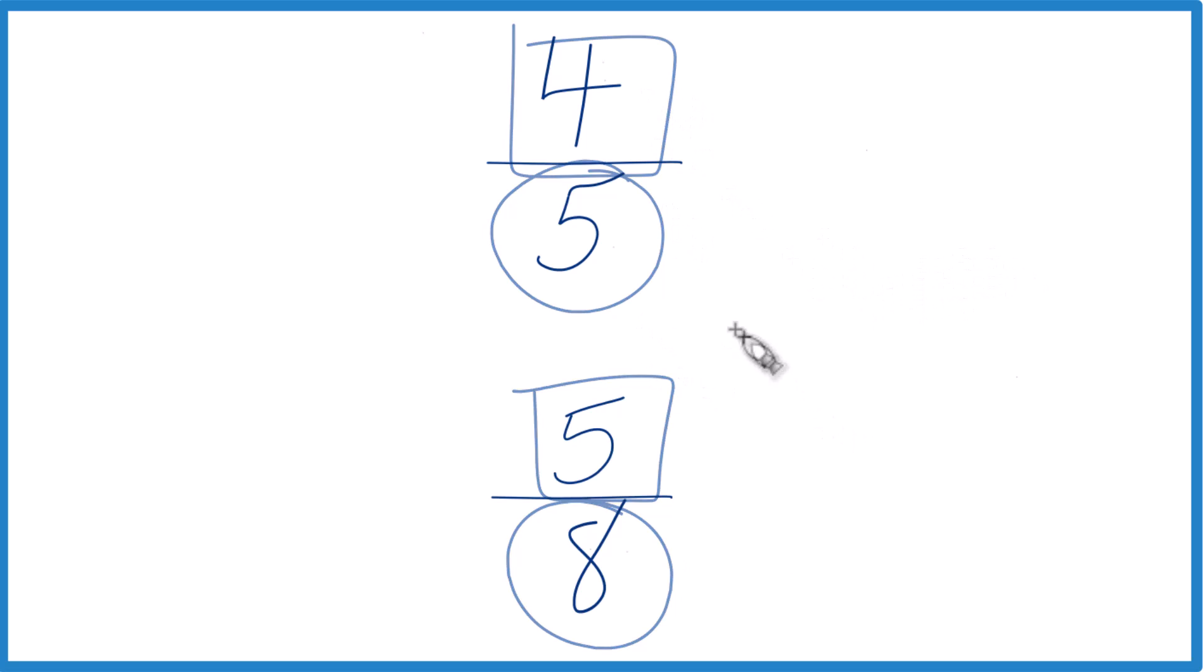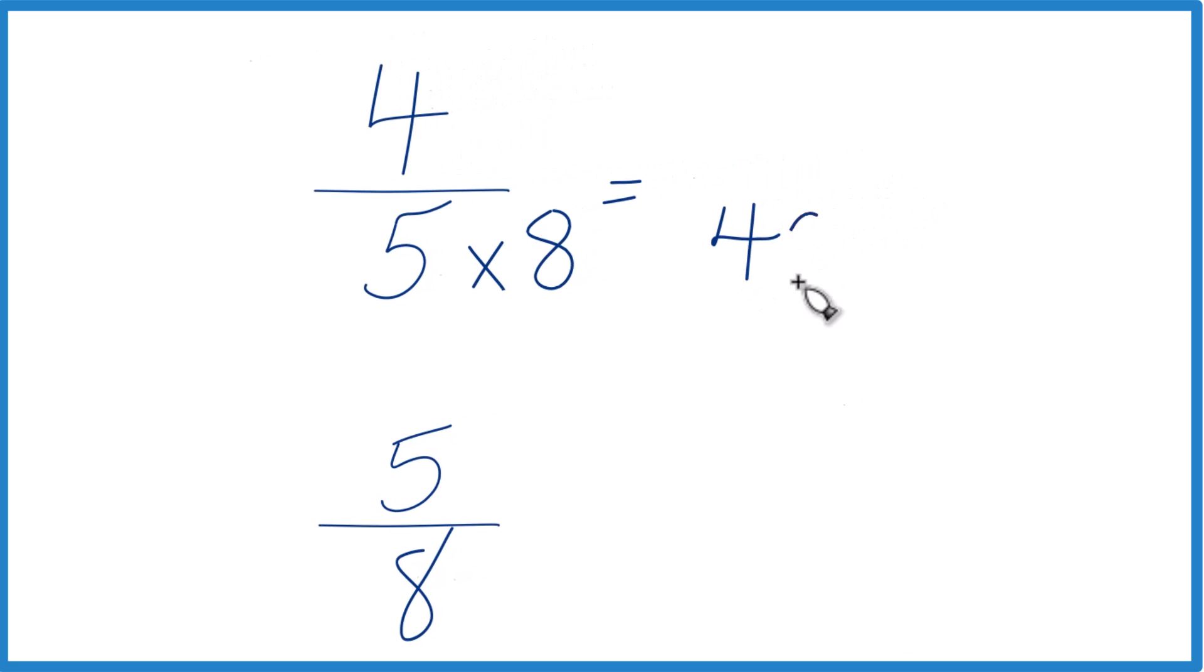Let's do that. So what I'll do is I'll multiply 5 times 8 because 5 times 8, that equals 40. And then down here, I'll multiply 8 times 5 because 8 times 5, that also equals 40.